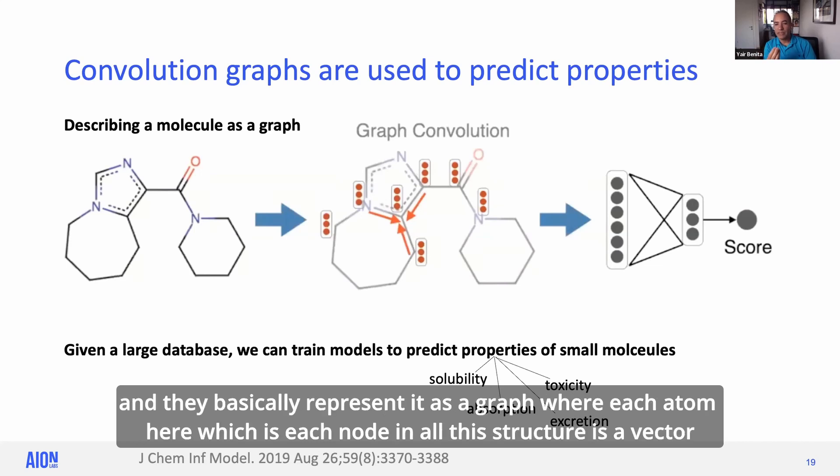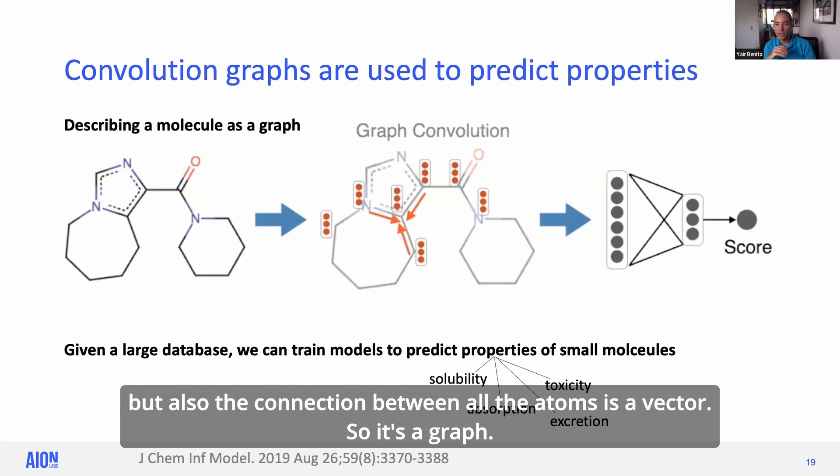And they basically represent it as a graph where each atom, which is each node in all these structures, is a vector. But also the connection between all the atoms is a vector. So it's a graph.